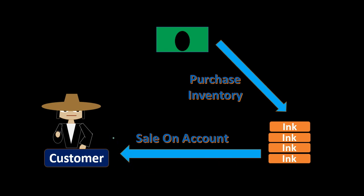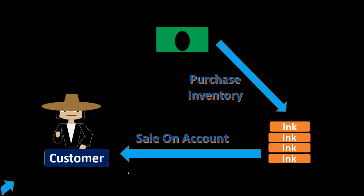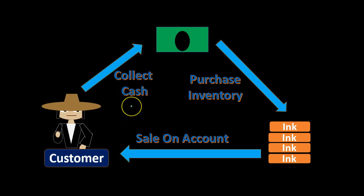We're going to say we make the sale on account. Now we could make the sale for cash and receive payment at the point of sale, but in order to work through the standard cycle, we'll say we sell something on account — meaning we invoice the client, provide the inventory to the client, and expect to receive payment at a later point in time. When we do receive payment, we're going to collect the cash, decreasing accounts receivable and increasing cash at that time.